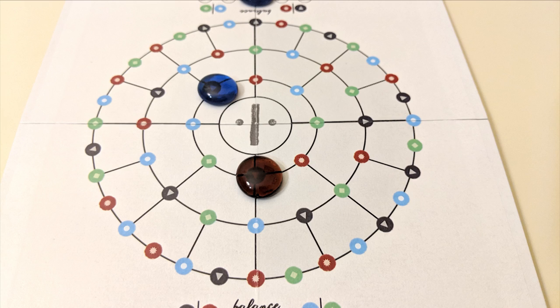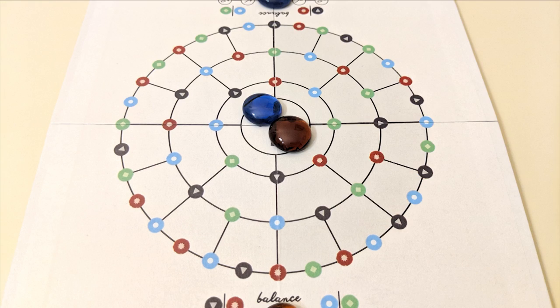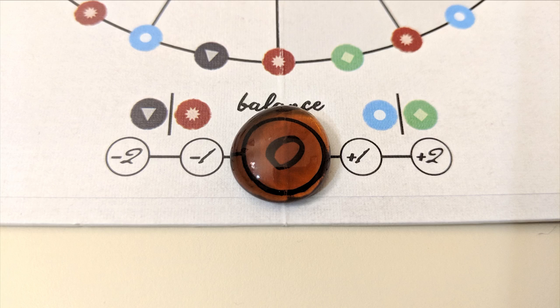When you've fully completed all three decks of objectives, you and your partner must reach the center of the board on consecutive turns. You can use any color card to reach the center, but your balance must be at zero for it to count as a win.